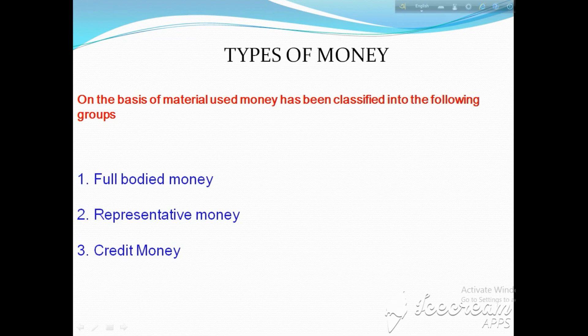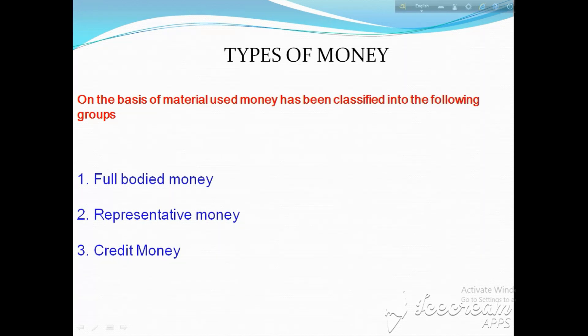On the basis of material used, money has been classified into the following groups. These groups are the broad classification of money. The first classification is full-bodied money, the next one is representative money, and the third one is credit money. Let us understand what is full-bodied money, representative money, and credit money in detail.